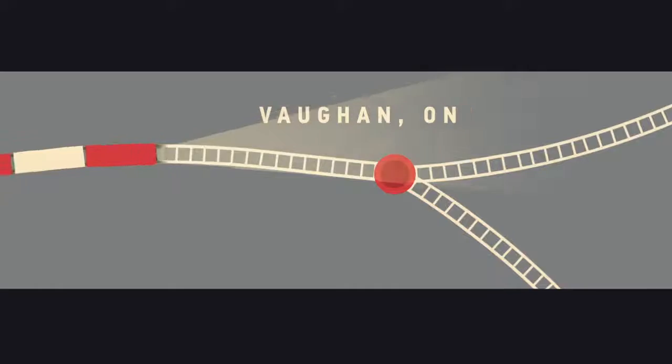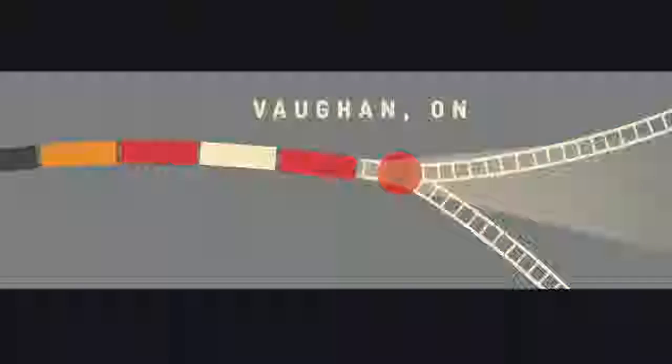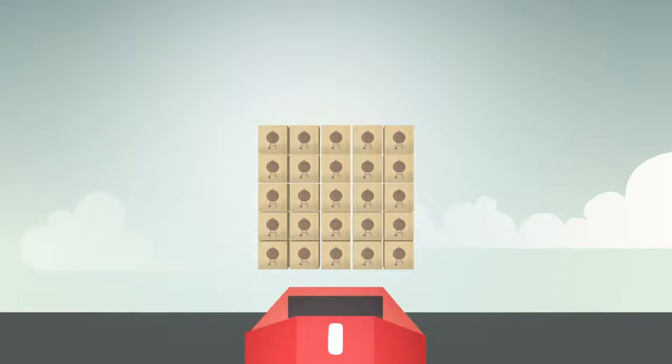Our intermodal terminal in Vaughan, Ontario is the final rail destination. The shipment is unloaded from the train and trucked directly to the customer's distribution centre.